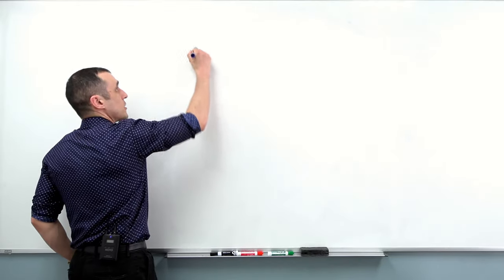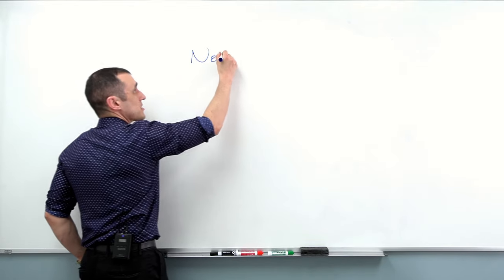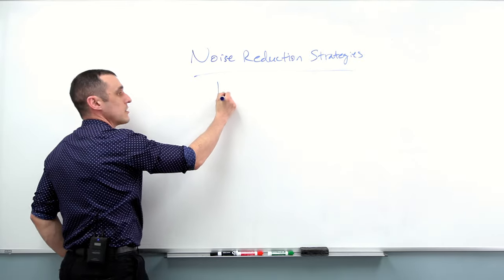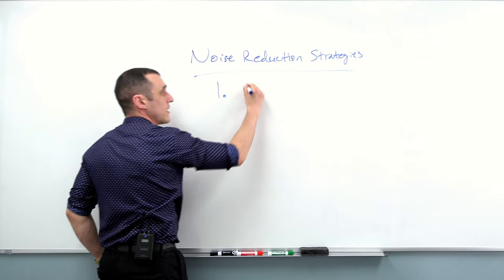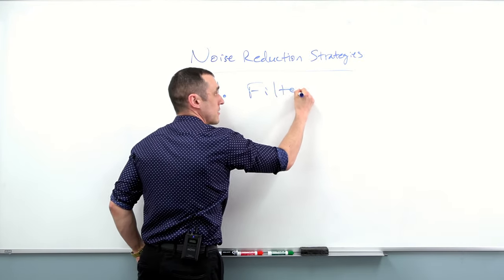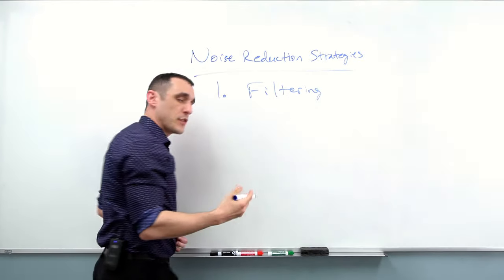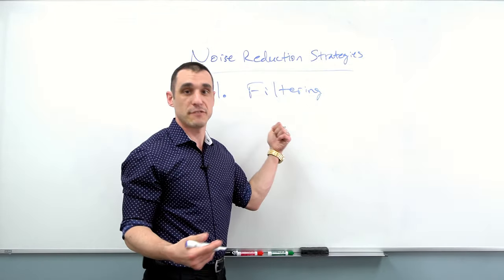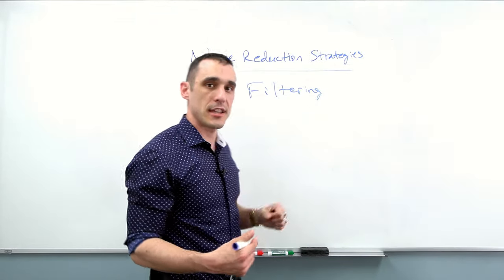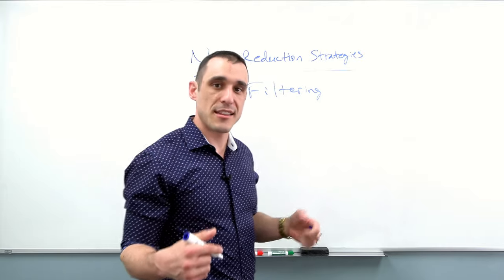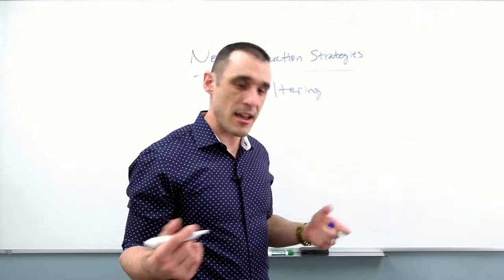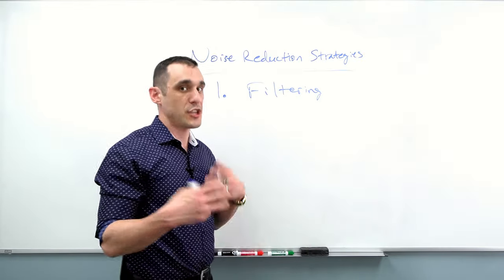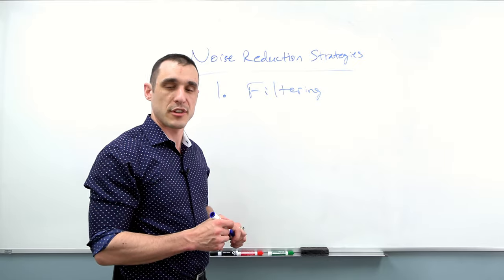Some of these noise reduction strategies will include, number one, filtering. When we talk about filtering, we're usually talking about literally a circuit that filters stuff — a filter circuit. Sometimes something as simple as just an EMI filter, like a ferrite bead, is usually brought up as a cure-all for all these different types of noise.